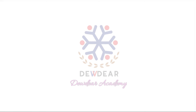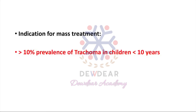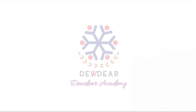The indication for mass treatment in trachoma is a prevalence greater than 10 percent of moderate and severe trachoma in children less than 10 years of age. If this threshold is exceeded, mass treatment for trachoma is indicated.